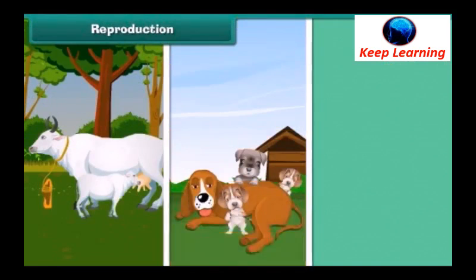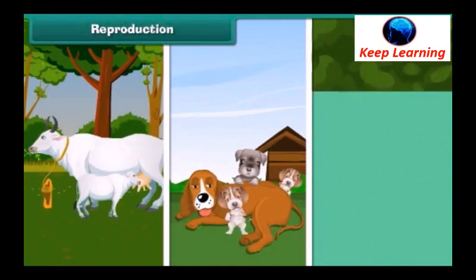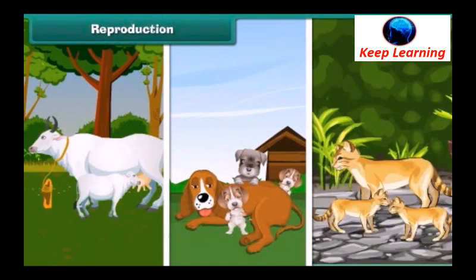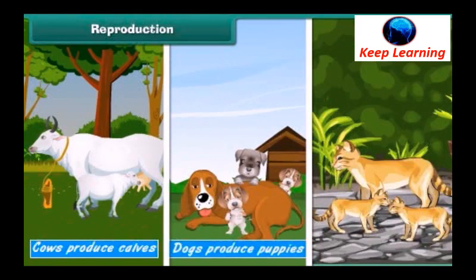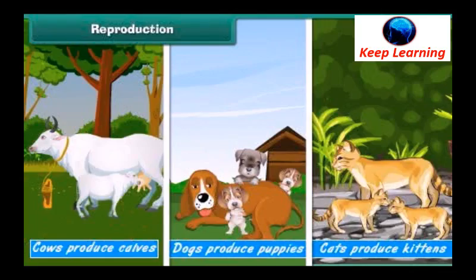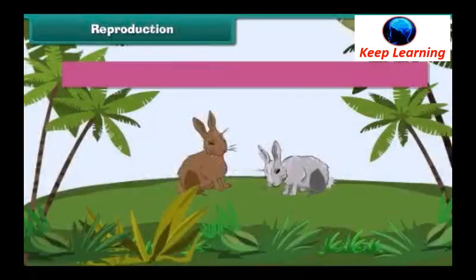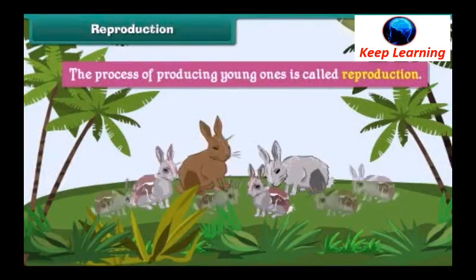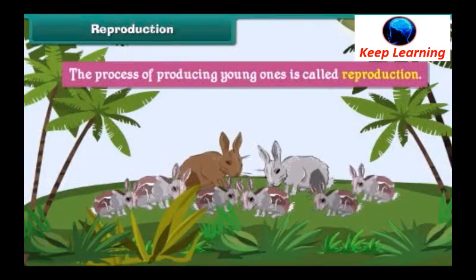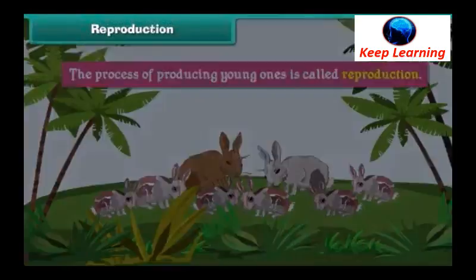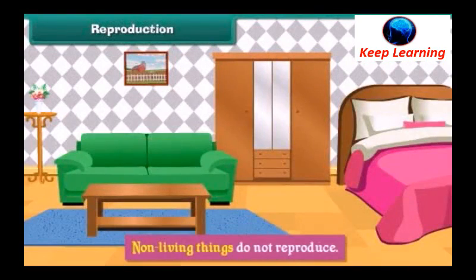All living things produce young ones like them. For example, cows produce calves, dogs produce puppies, and cats produce kittens. The process of producing young ones is called reproduction. Non-living things do not reproduce.